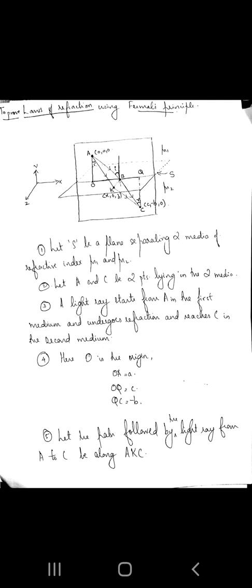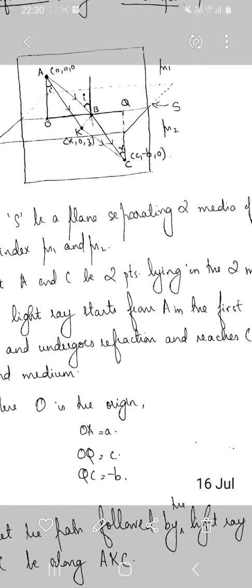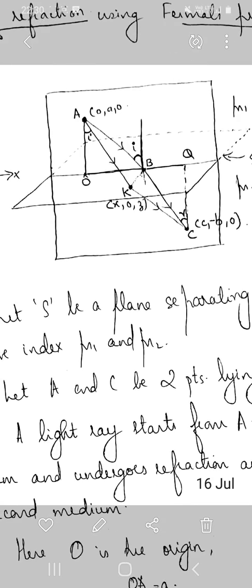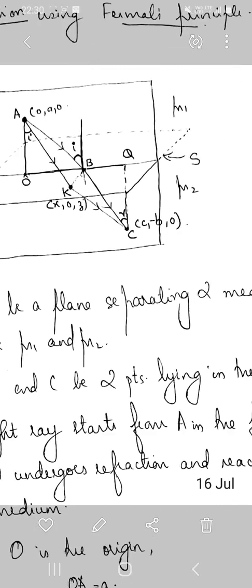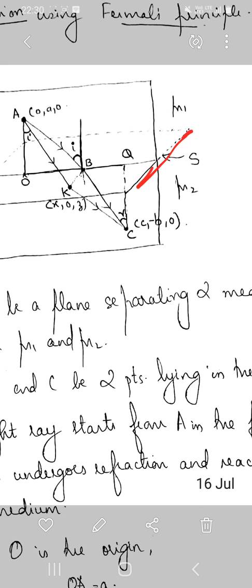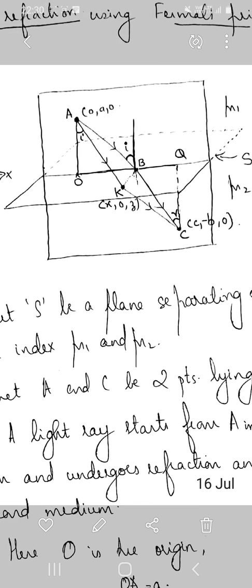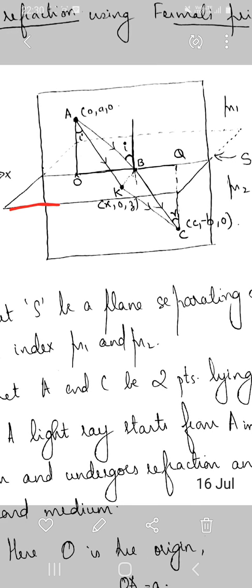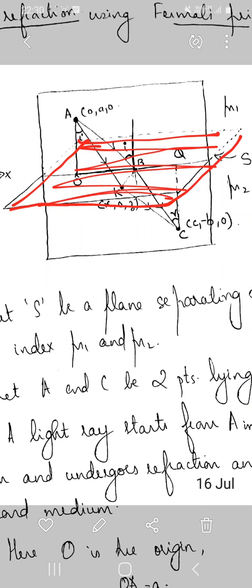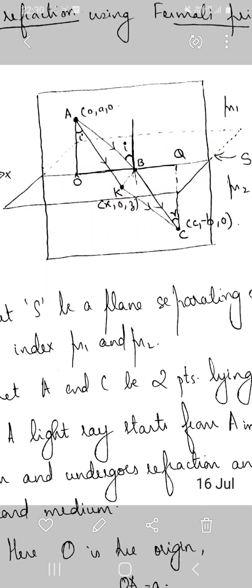Let S be a plane separating two media having refractive index mu1 and mu2. This is the plane S which separates the two media. Above this plane S, refractive index is mu1, and below it refractive index is mu2.